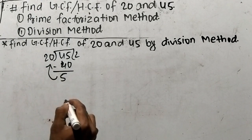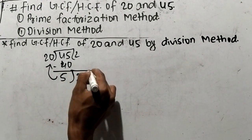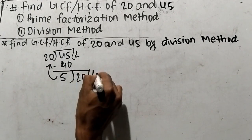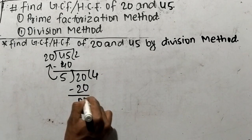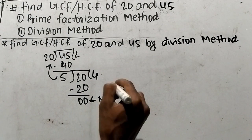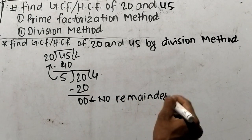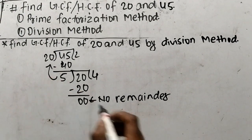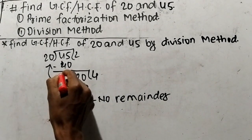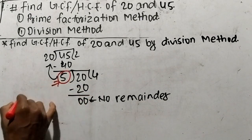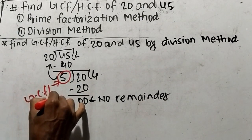We have to divide the divisor 20 with the remainder 5. So 5 divides 20: 5 times 4 means it is 20. Now at last we have no remainder. The divisor 5 leaves no remainder, therefore the divisor 5 becomes the GCF or HCF.